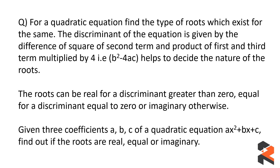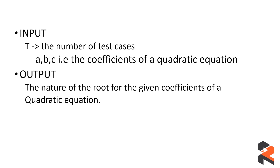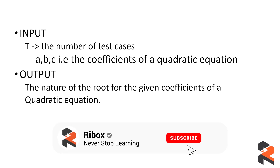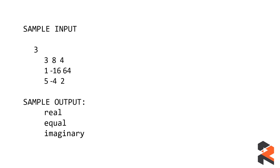As discussed in our previous videos, try to figure out what the question is actually delivering — extract the useful information first. We are given the discriminant b² − 4ac as a property of the quadratic equation, and roots can be real, equal, or imaginary. Looking at the sample input and output: we get t number of test cases followed by three coefficients a, b, c. For input 3, 8, 4 the output is real; the second set gives equal; and for 5, −4, 2 the output is imaginary.